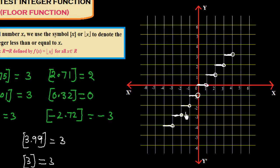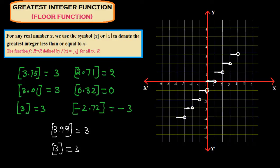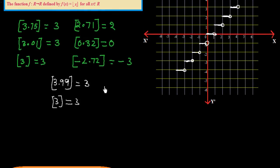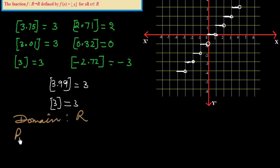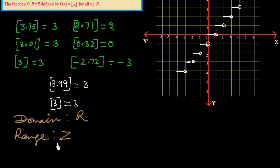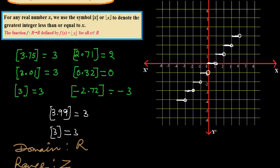This is the graph of the greatest integer function. Now we see how we get the domain and range of this. The domain is R — any number you can put in place of x, such as 2.9, 2.72, minus 2, 3, 11, any number. So domain is R. For the range, we are getting only integers — 3, 2, 0, minus 3 — no fractional or decimal numbers. So the range is Z, the set of integers.